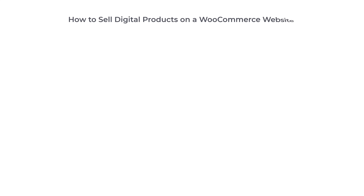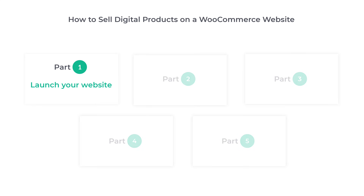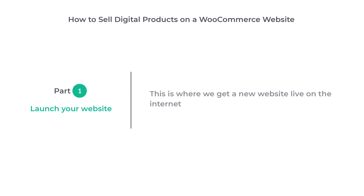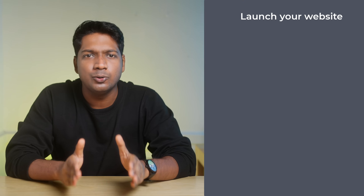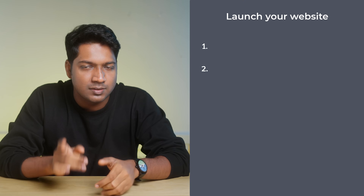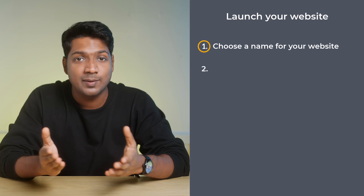To sell digital products on a WooCommerce website, we are going to do just 5 parts. The first part is to launch your website — this is where we get a new website live on the internet. To launch your website, we are going to do 2 simple steps. The first step is to choose a name for your website.